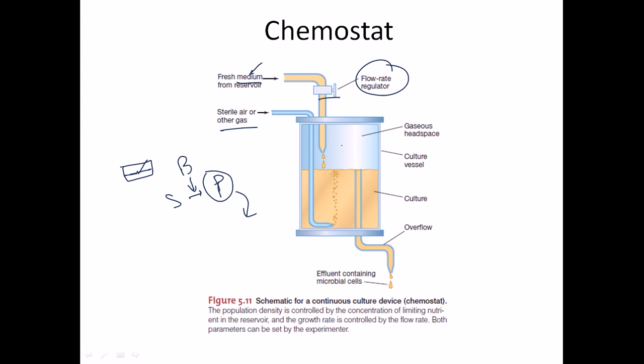So chemostat is nothing but a continuous culture device maintaining a culture inside that huge chamber. That's the whole process of chemostat and how we use this chemostat for completing the continuous culture system, for maintaining a continuous culture. That's it guys, and I hope that's helpful, thank you.